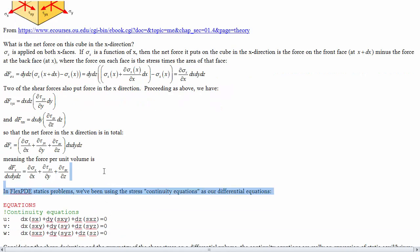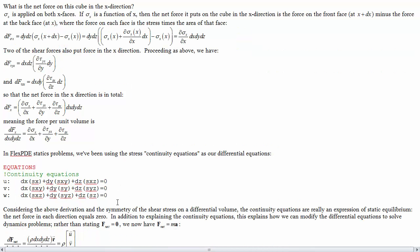In FlexPDE, since we started using it for statics problems, we've been solving the continuity equations as our actual differential equations in the equation section. The u-equation was rate of change in the x-direction of sx, the x-axial stress, plus the rate of change in the y-direction of the xy-shear stress, plus the rate of change in the z-direction of the xz-shear stress. Comparing that with this, we can see that what we've actually been solving is equivalent to saying that the net force per unit volume in the object is equal to zero. This explains why this has been the set of equations that worked well for statics problems.